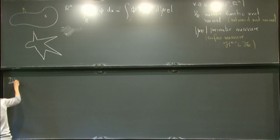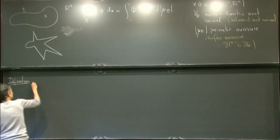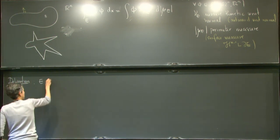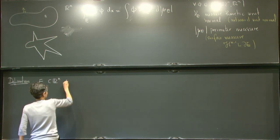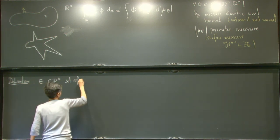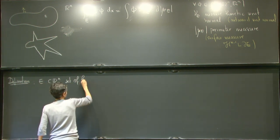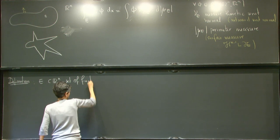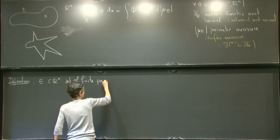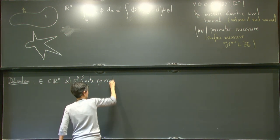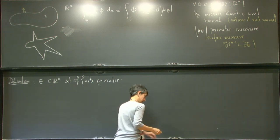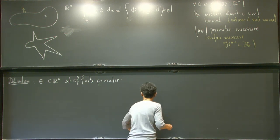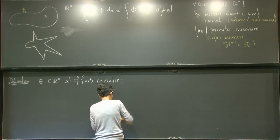Definition: Let E in R^n be a set of finite perimeter or of locally finite perimeter. The reduced boundary, denoted with a star on top, is defined as follows.